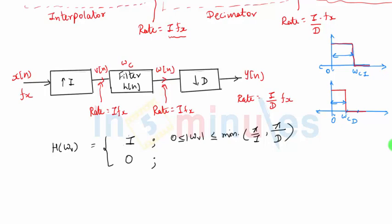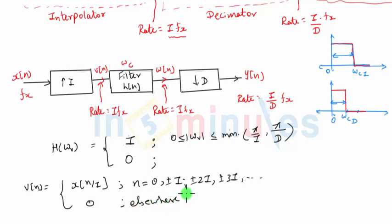Let's write down a few mathematical expressions now. V of n, which is output of the interpolator, can be written as x of n by i, and this will be valid for n equal to 0 plus minus i, plus minus 2i, plus minus 3i, and so on, and it is 0 elsewhere. This comes from the discussion on interpolation.